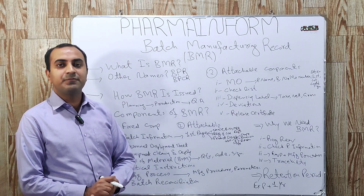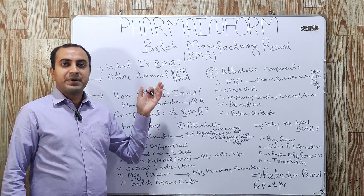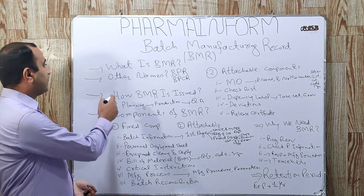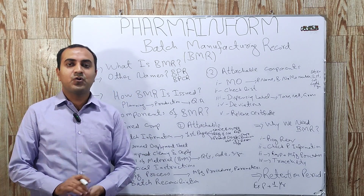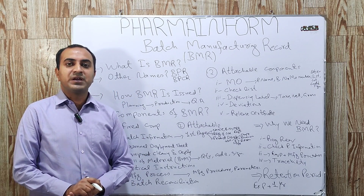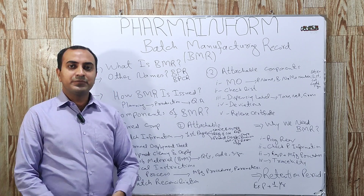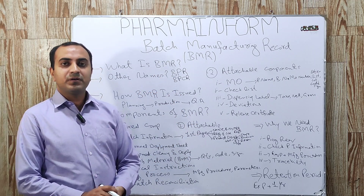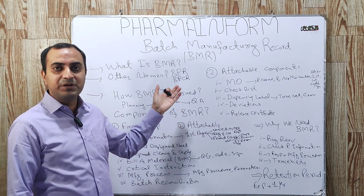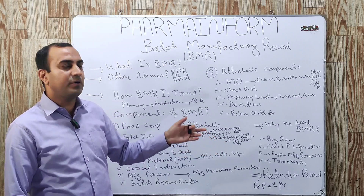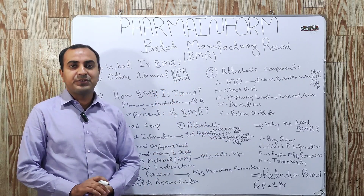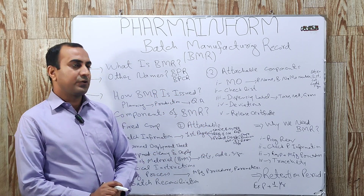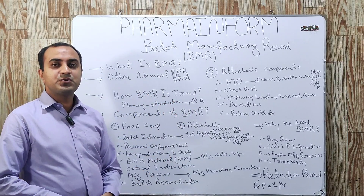In simple words, batch manufacturing record is the real-time recording of the batch manufacturing process. What are the other names of BMR? BMR other names are: BPR — batch production record, BPR — batch processing record, or BPCR — batch production and control record.